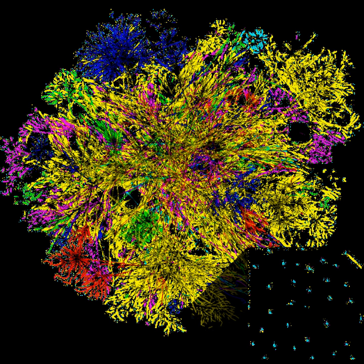Each packet is dispatched and may go via different routes. Potentially the system has to do as much work for every packet as the connection-oriented system has to do in connection setup, but with less information as to the application's requirements. At the destination, the original message data is reassembled in the correct order based on the packet sequence number. Thus a virtual connection, also known as a virtual circuit or byte stream, is provided to the end-user by a transport layer protocol, although intermediate network nodes only provide a connectionless network layer service.